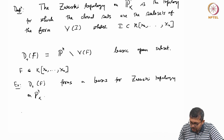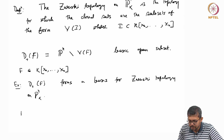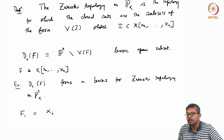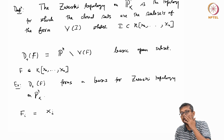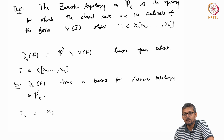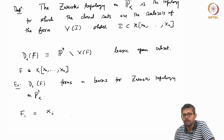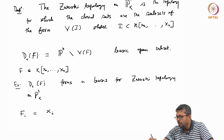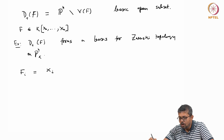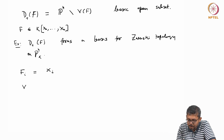Now, there are some special polynomials. If you take, for example, f_i — I call it x_i — these are monomials of degree 1. And these are actually the generators of this algebra k[x_0, x_1, ..., x_n]. So now you can talk about V(x_i) or V(f_i).